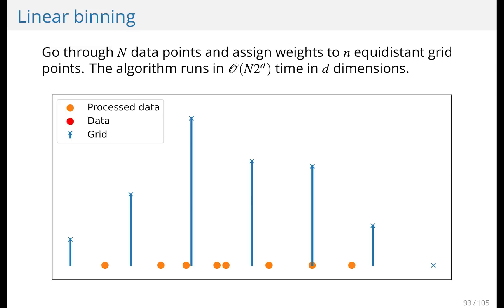So now this algorithm clearly has to go through every data point and then has to go to the two closest grid points. So the complexity is O of capital N, the number of data points, times two to the power of D. Because in higher dimensions there will be two to the power of D grid points that are adjacent which you have to visit and assign weights to.